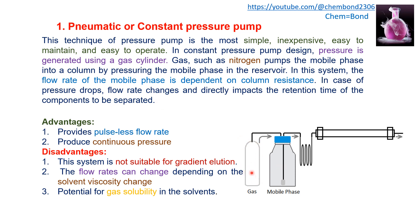If the pressure of the gas drops, the flow rate of the mobile phase changes and it will affect the retention time of the separated components. Advantages include pulseless flow rate and continuous pressure. Disadvantages include: not suitable for gradient elution, flow rate changes if solvent viscosity changes with temperature, and potential for gas solubility in solvents. If the gas is soluble in the solvent, the pressure will drop and affect the retention time of the component — this is the major drawback of this pump type.